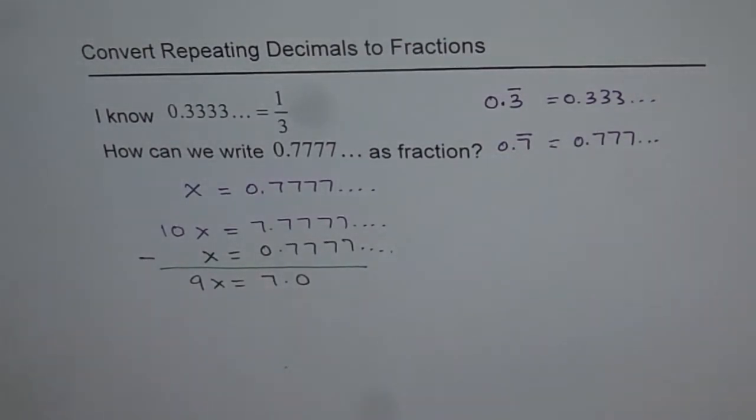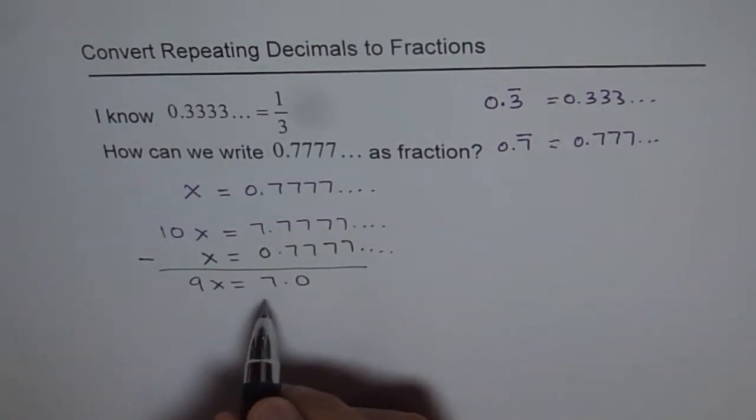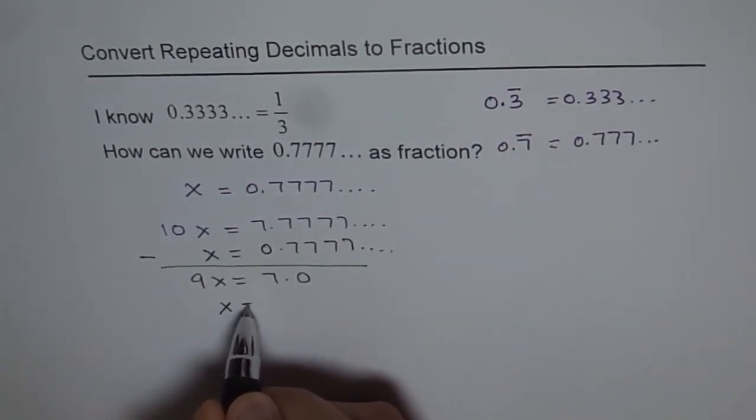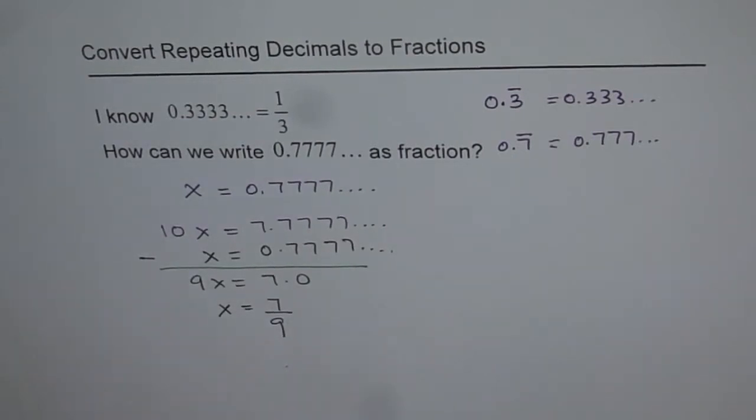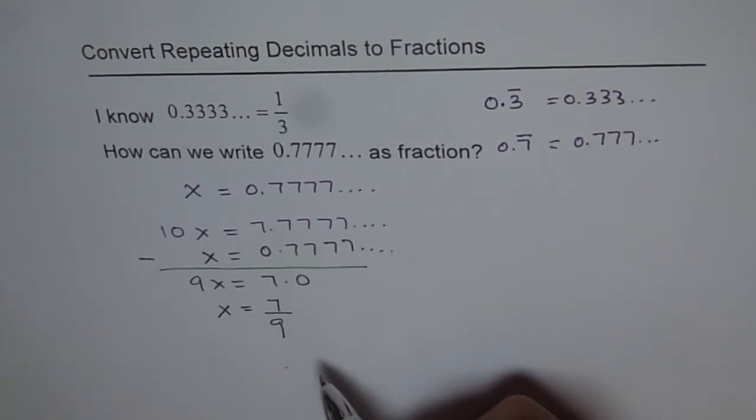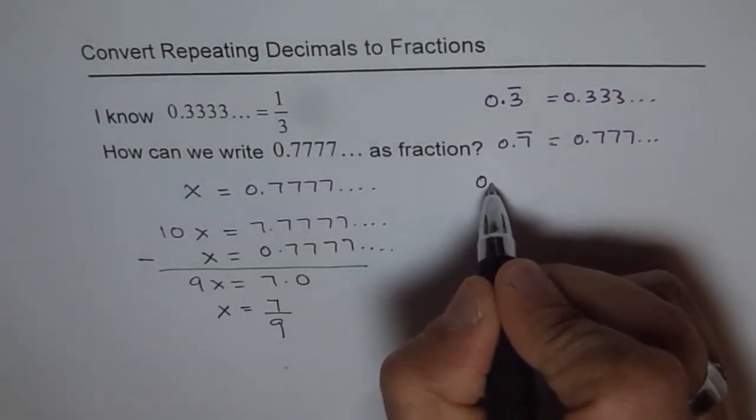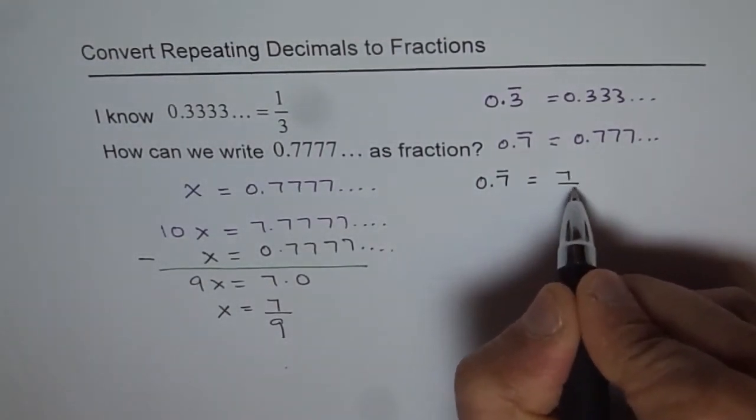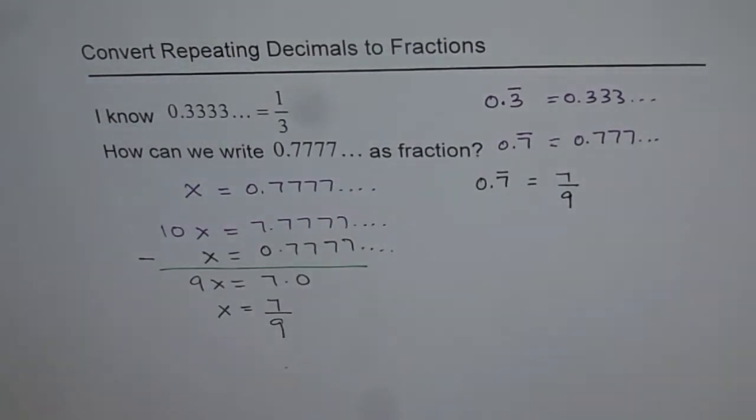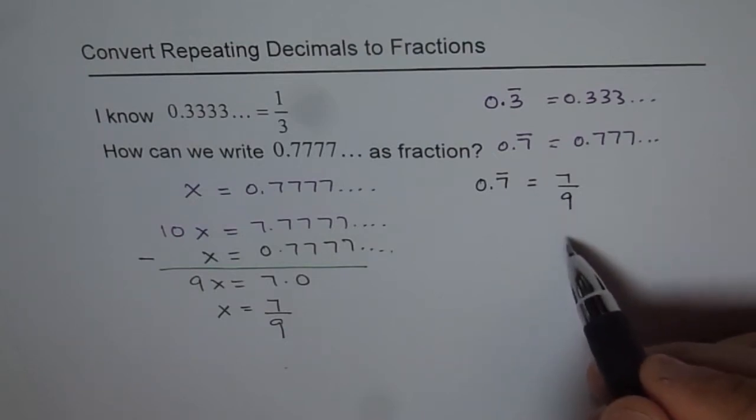Now I can divide by 9 on both the sides and get my answer. So I get x equals to 7 over 9. So that is the way we can write such kind of repeating decimals as fractions. We get 0.7 recurring equals 7 over 9. Try it. Divide 7 by 9 and check what do you get. Is it the right answer?